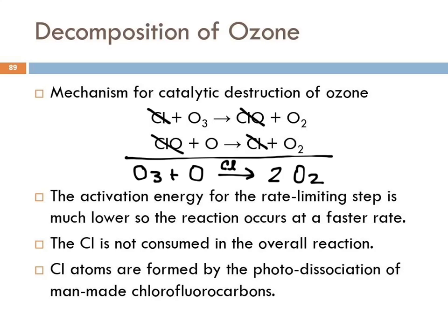We often indicate the presence of a catalyst by writing it over the reaction arrow. The rate-limiting step is much lower, so the reaction happens at a much faster rate. Because the catalyst is not used up, one chlorine atom can catalyze the reaction of millions and billions of ozone molecules—it just goes over and over again. So just a little bit of chlorine can affect the destruction of the ozone layer in a larger way than you might expect.